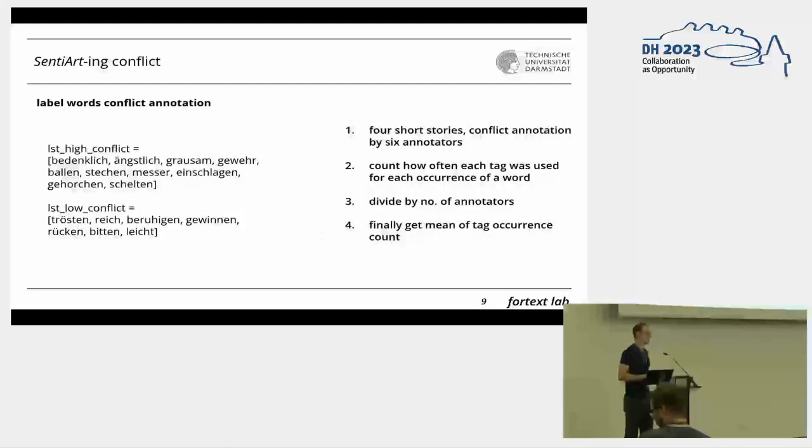In a second conflict approach, we took label words from an explicit literary source. We had four German short stories annotated with a conflict tag set. We weighed each annotated word by how often it was tagged with a certain tag, then took words most tagged with conflict tags for the upper end and conflict resolution for the lower end. This resulted in high conflict labels: apprehensive, fearful, cruel, rifle, clench, stab, knife, smash, obey, and scold.